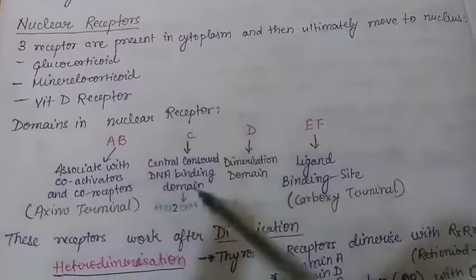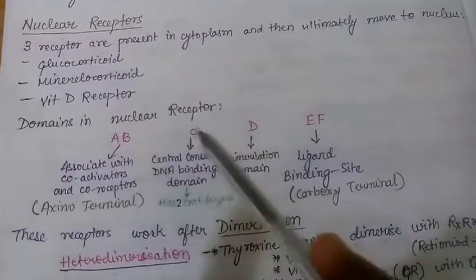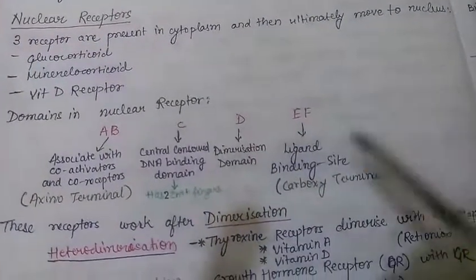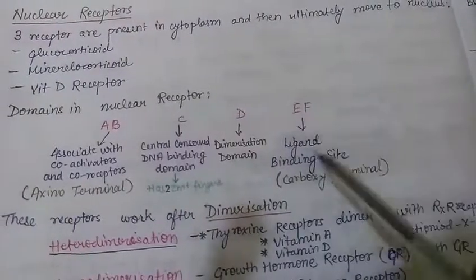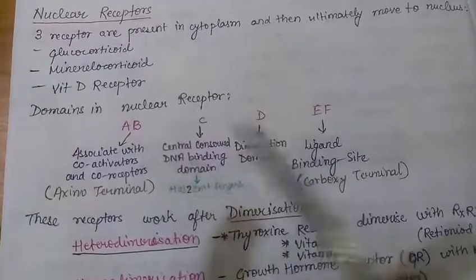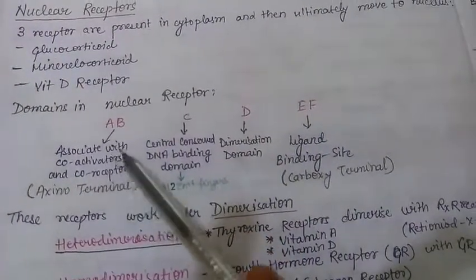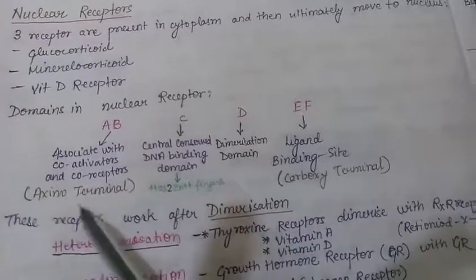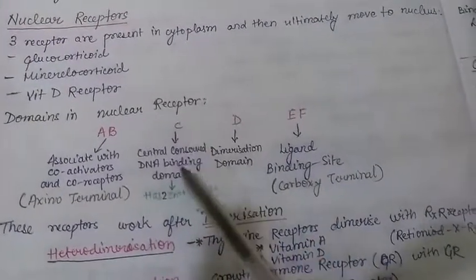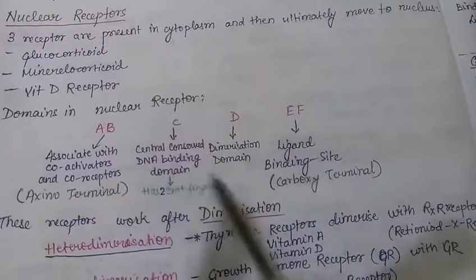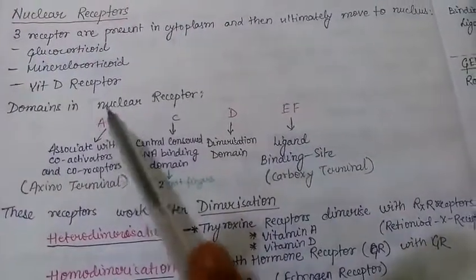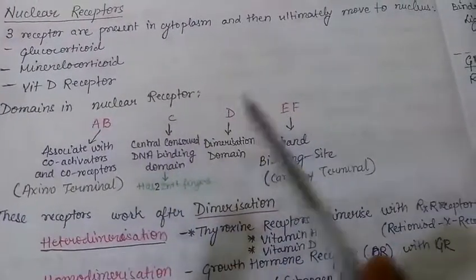Nuclear receptors have six domains: A, B, C, D, E, and F. A and B work together and are amino-terminal, generally associated with co-activators or co-repressors. C is the central conserved DNA-binding domain, which has two zinc fingers. D is the dimerization domain. E and F work together as the ligand-binding site — they are carboxy-terminal.